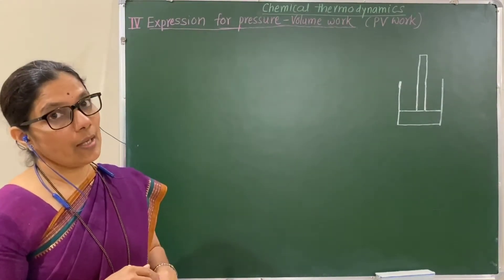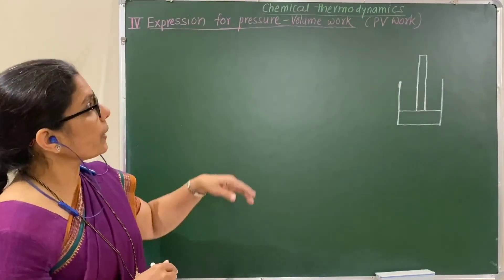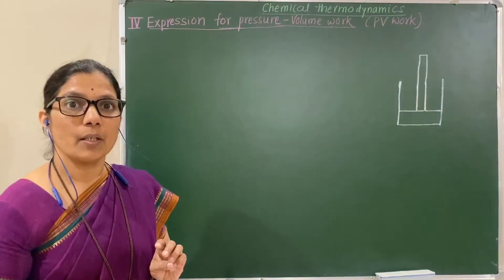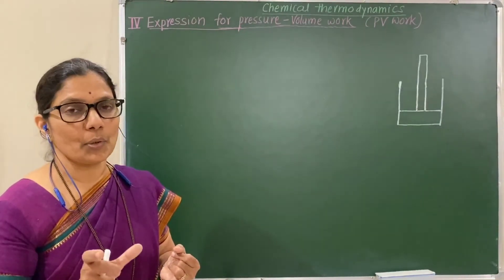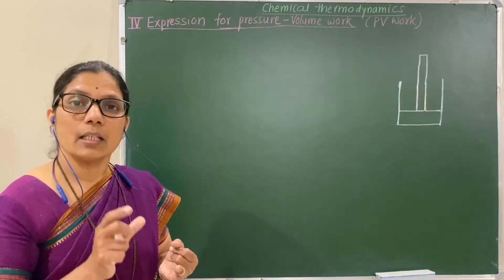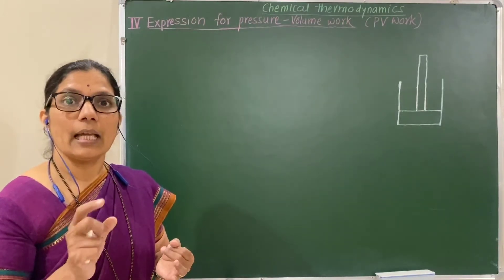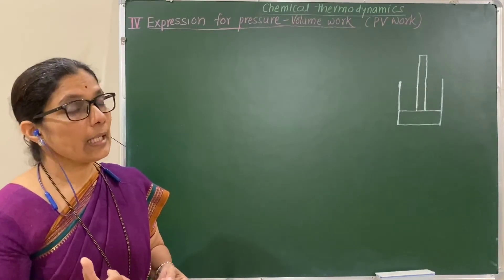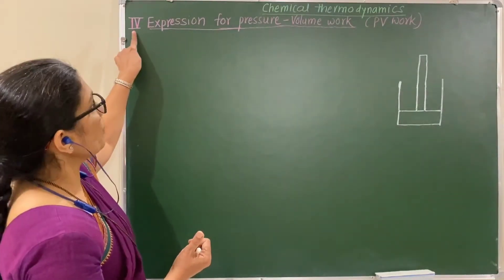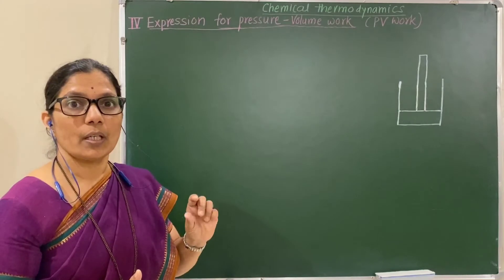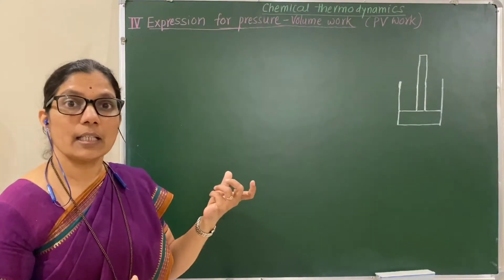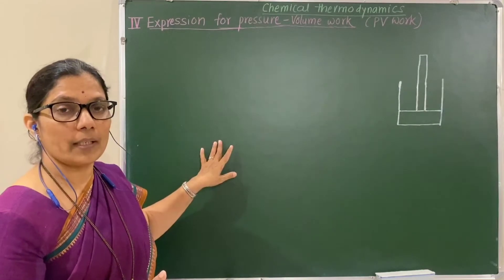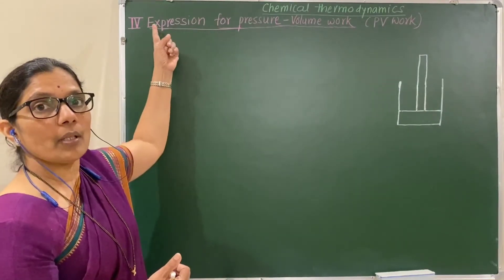In the previous session, I started the topic of chemical thermodynamics. We studied the first part — introduction, then the second, terms used in thermodynamics, and third, the nature of work and heat. Let us now start the fourth point: expression for pressure-volume work, that is PV work. A question may be asked on this part, so we'll derive the expression for PV work — a two-mark derivation that is very simple.